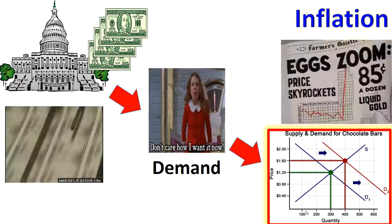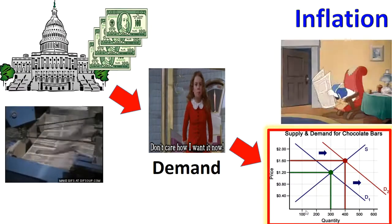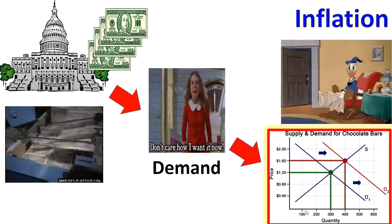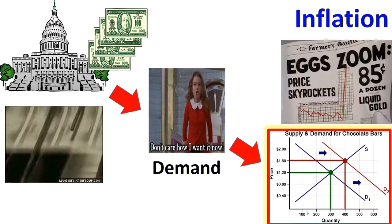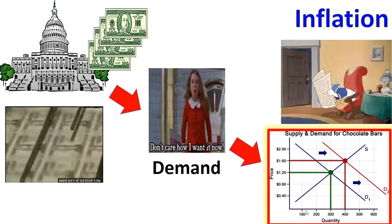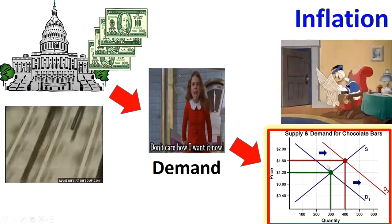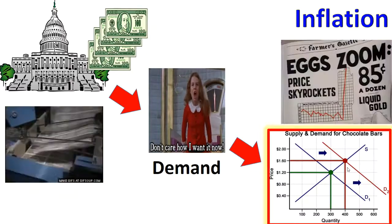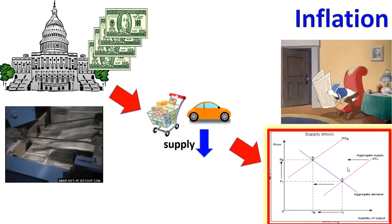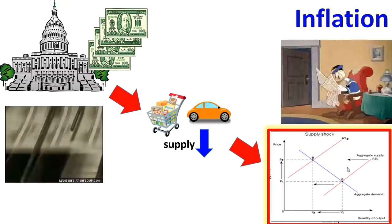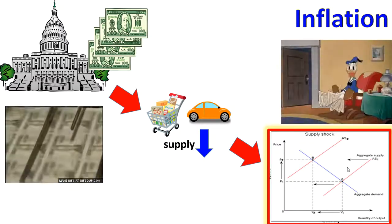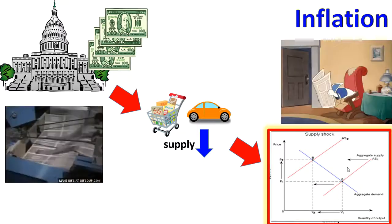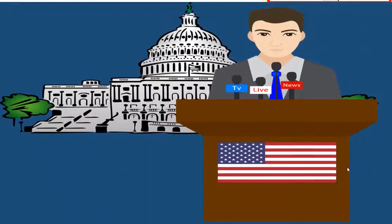Inflation is a hidden tax. When the government prints more money, people have more money, they spend more money, and that's an increase in demand. As we know, when demand increases, prices go up — that's inflation. In this video, we're also going to give you an example of supply decreasing: not only do we have increased demand from printing money, but we also have a supply decrease, which also drives prices up.